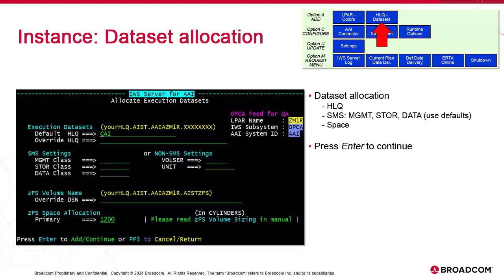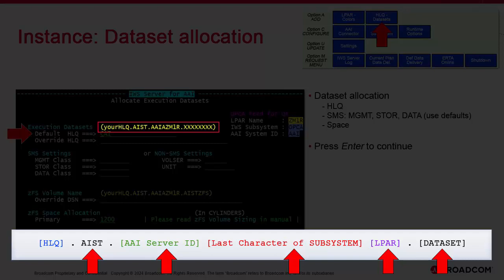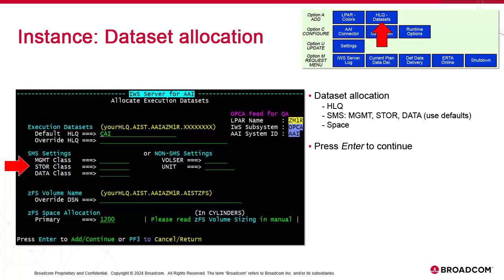In the next screen, we allocate datasets. They require an HLQ. The default option lets you enter a high-level HLQ and the software appends the rest. The reason we emphasize the importance of IWS subsystem and AAI instance ID is this: when the instance's datasets are created in ZOS, the default naming convention of the HLQ uses the following — first a fixed value, AIST dot; then the AAI instance ID; then the last character of the IWS subsystem; then LPAR dot; and finally the dataset name. AAI server ID name and IWS subsystem were entered in the previous screen. Then we have the ZOS system settings: management class, storage class, data class, volume serial, and so forth.